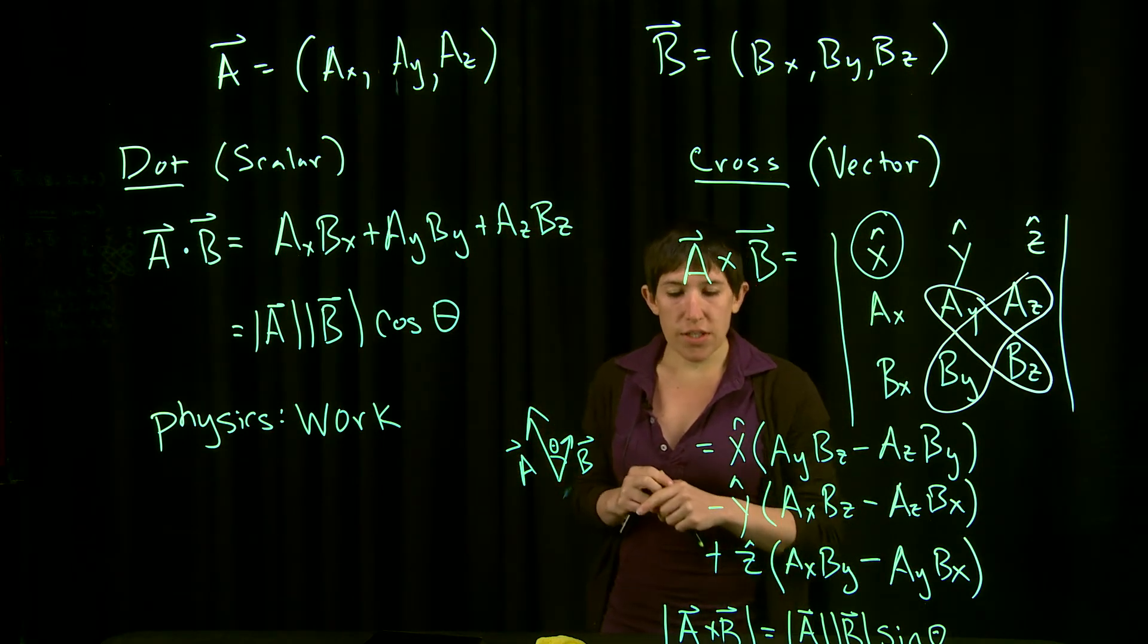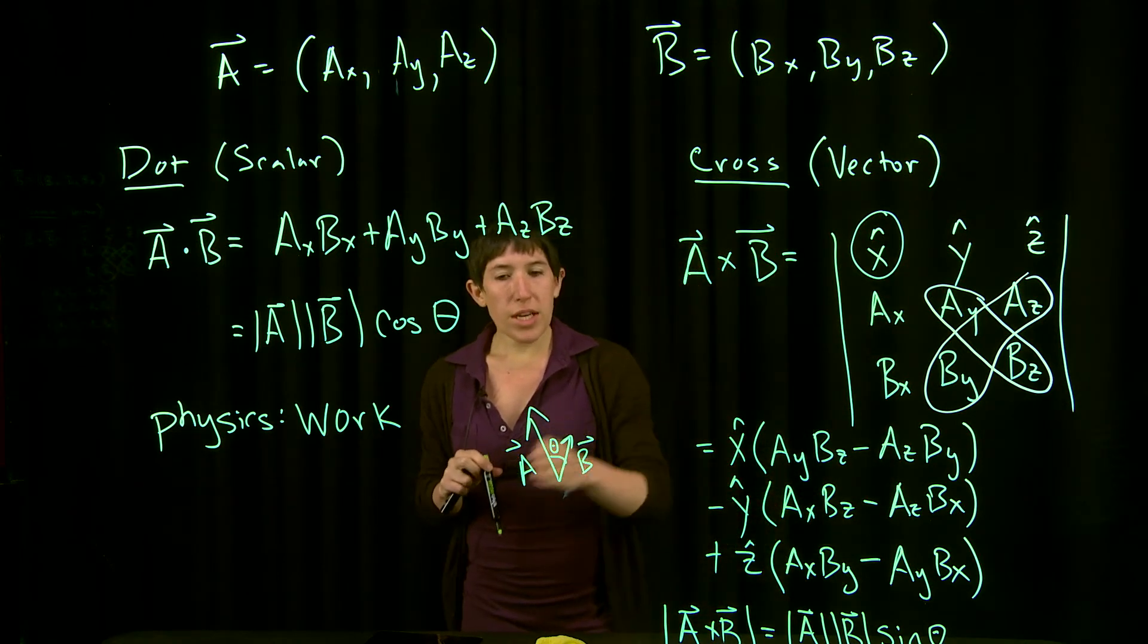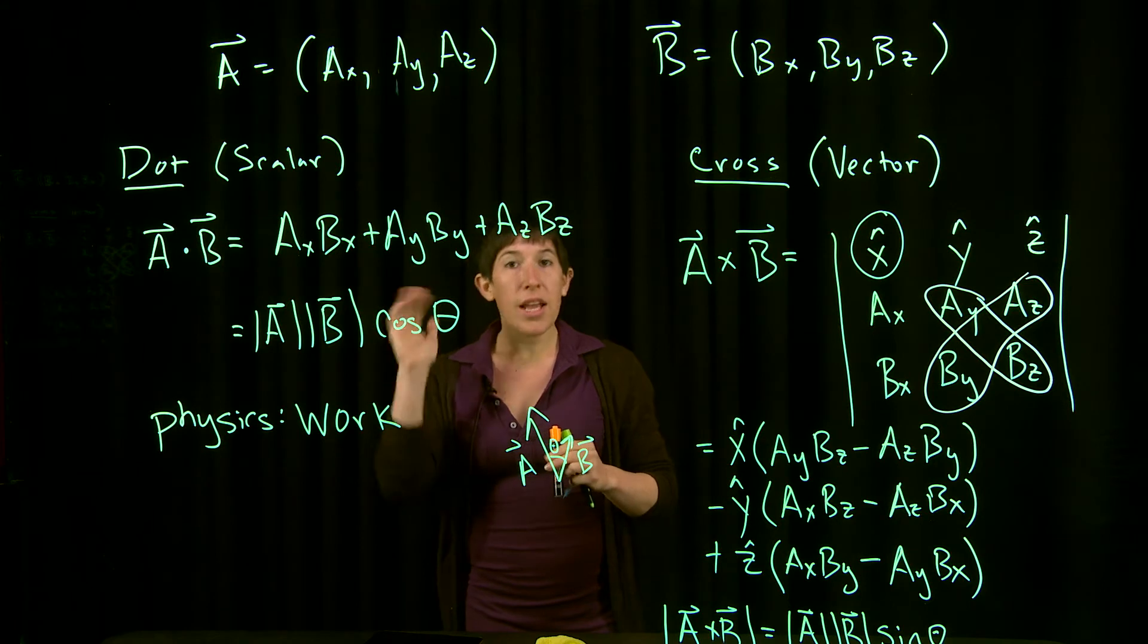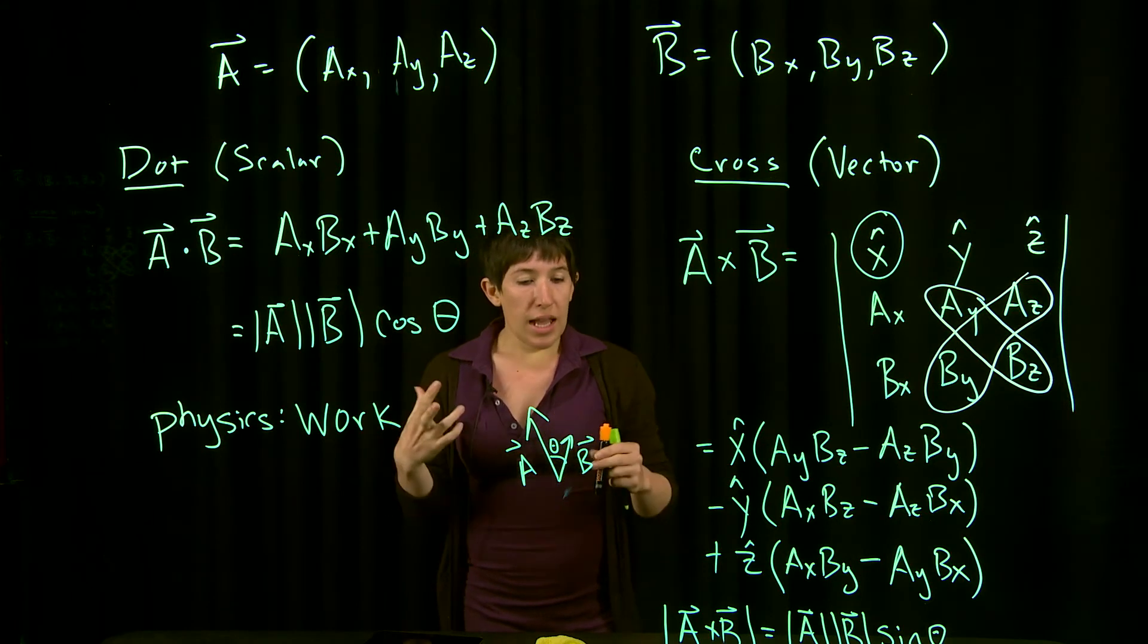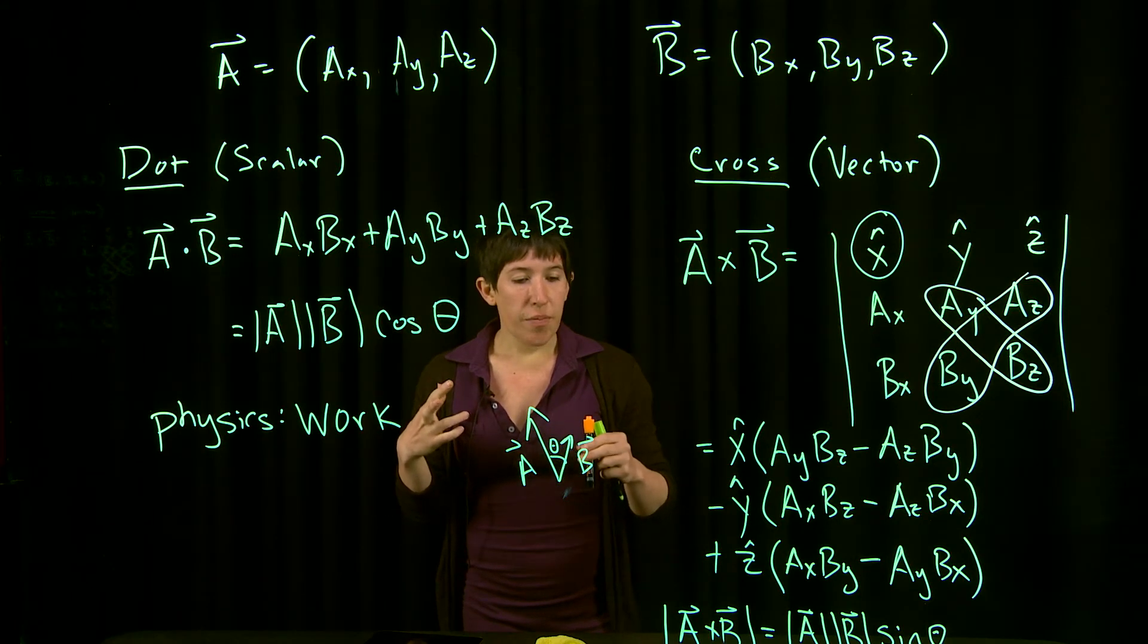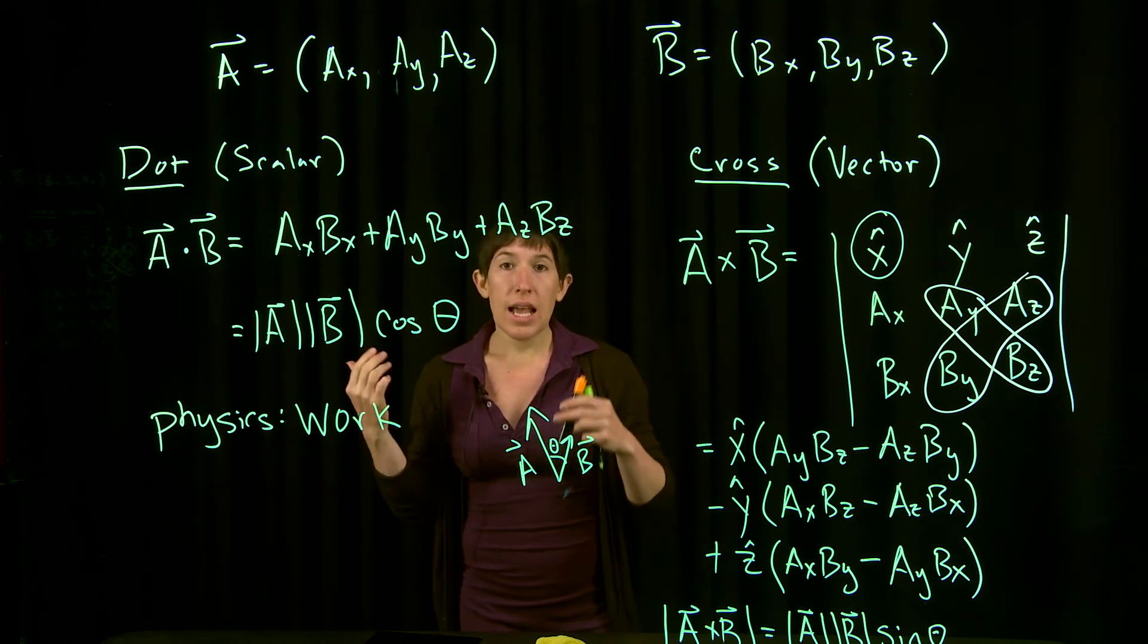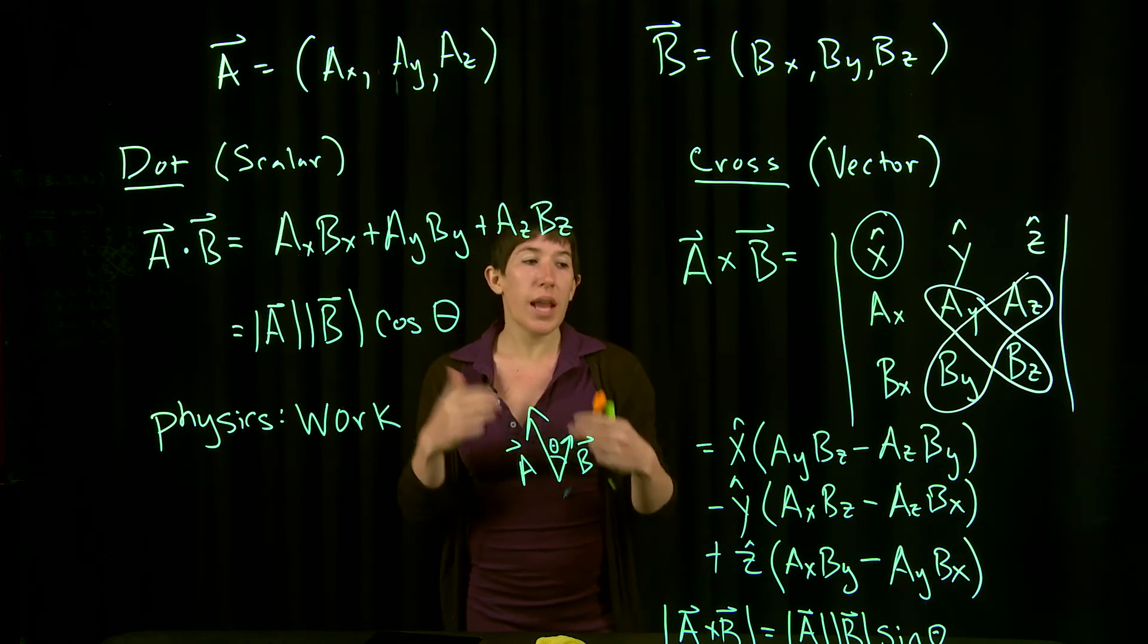We need some direction associated with this. The direction is given by the right-hand rule for A cross B. One thing that's really important to realize is that in the cross product, A cross B equals negative B cross A.